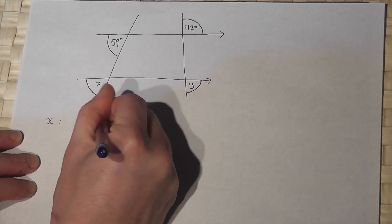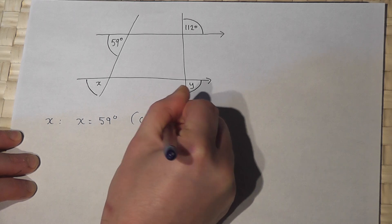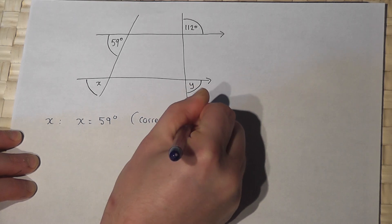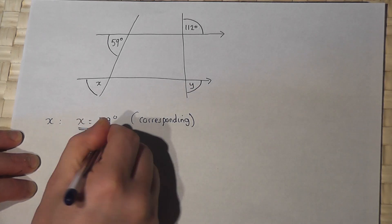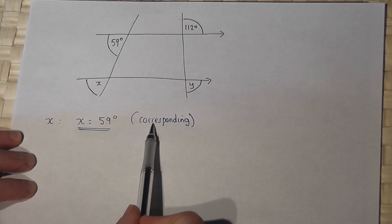So X equals 59 degrees because it's corresponding. If they're in the same position they're called corresponding angles.